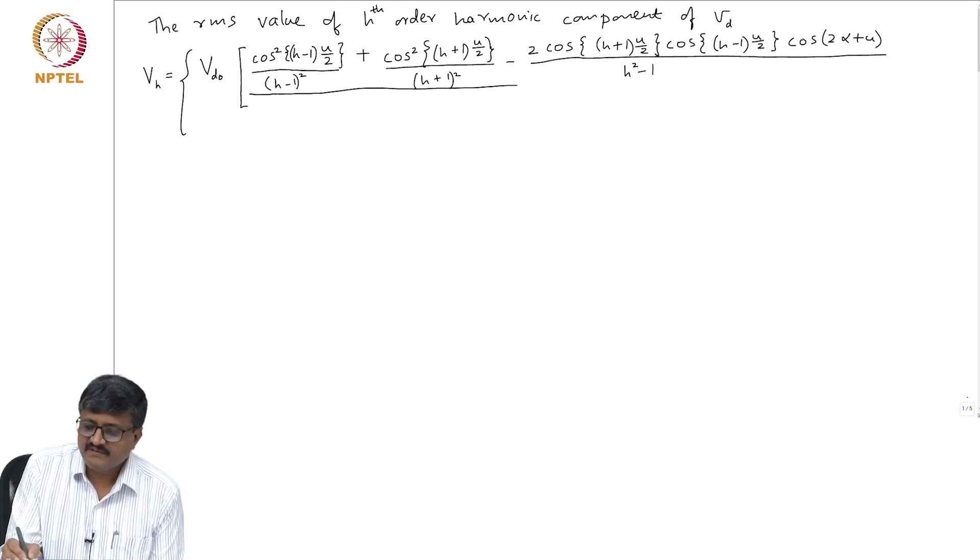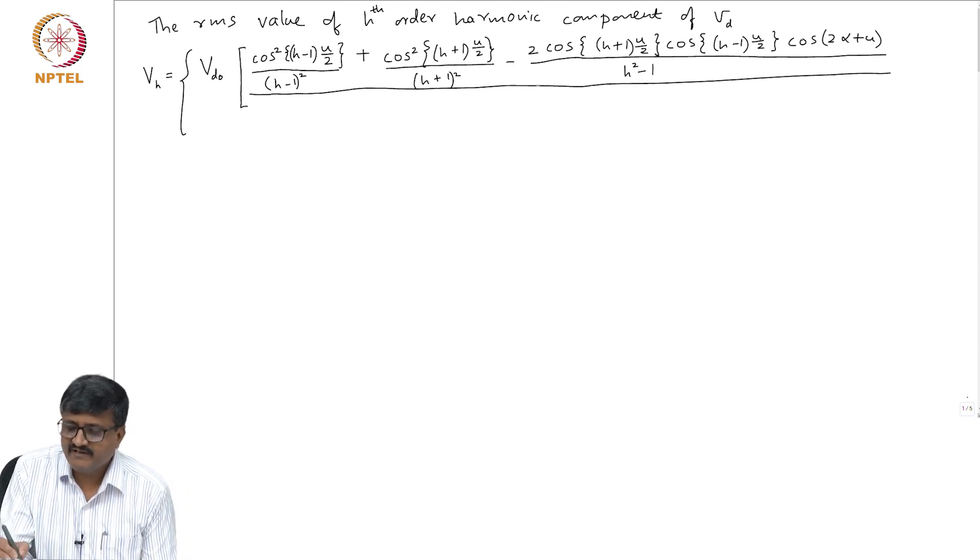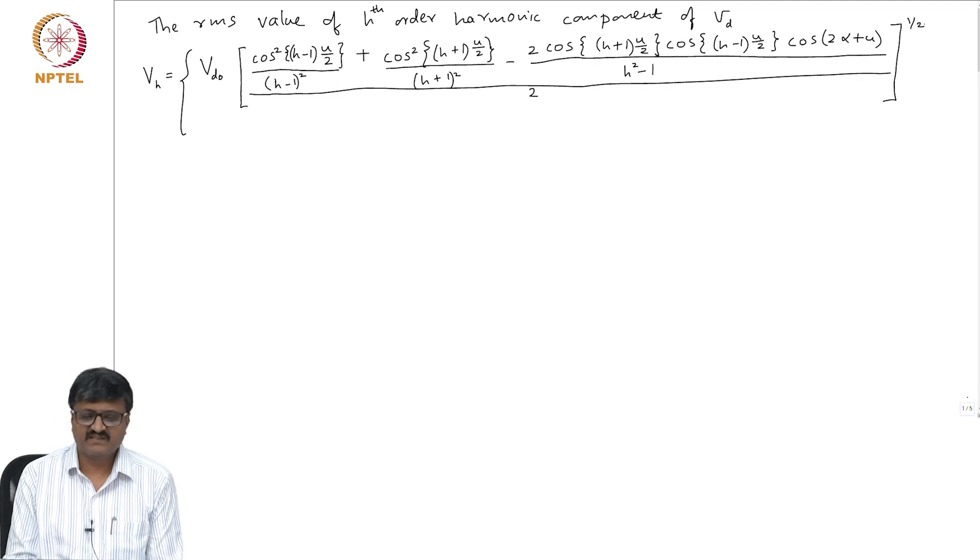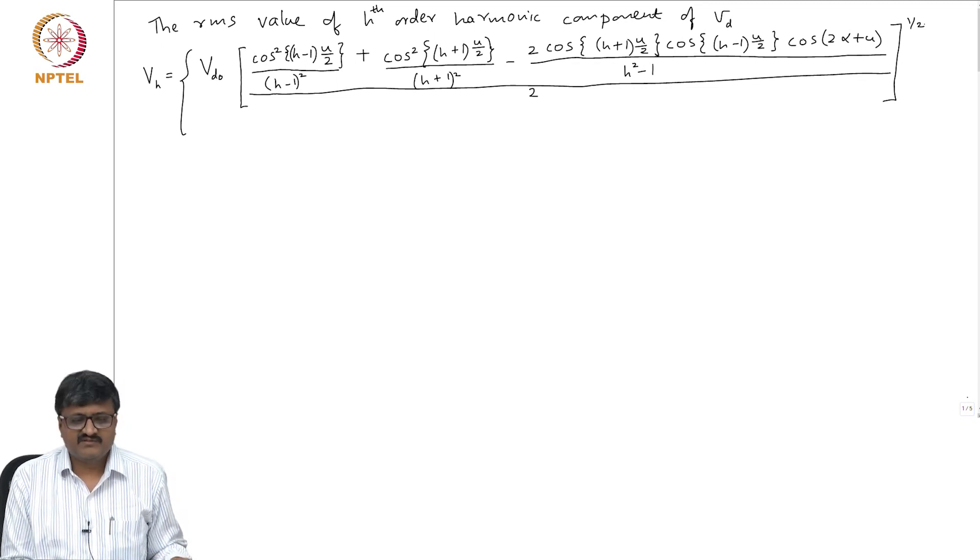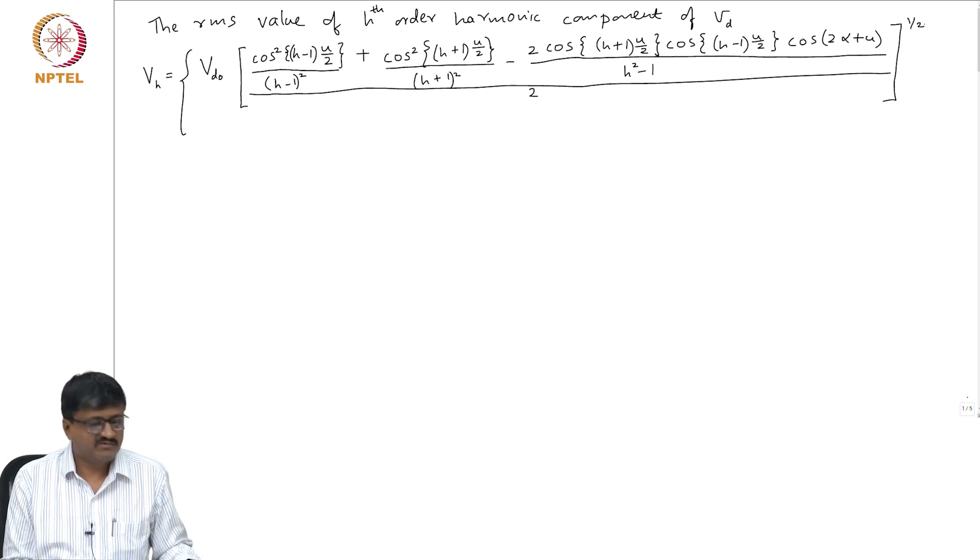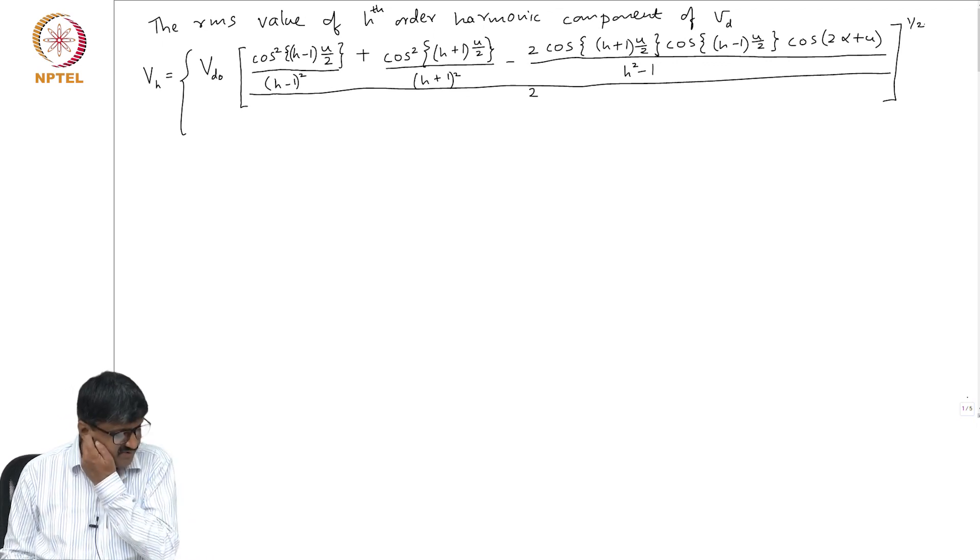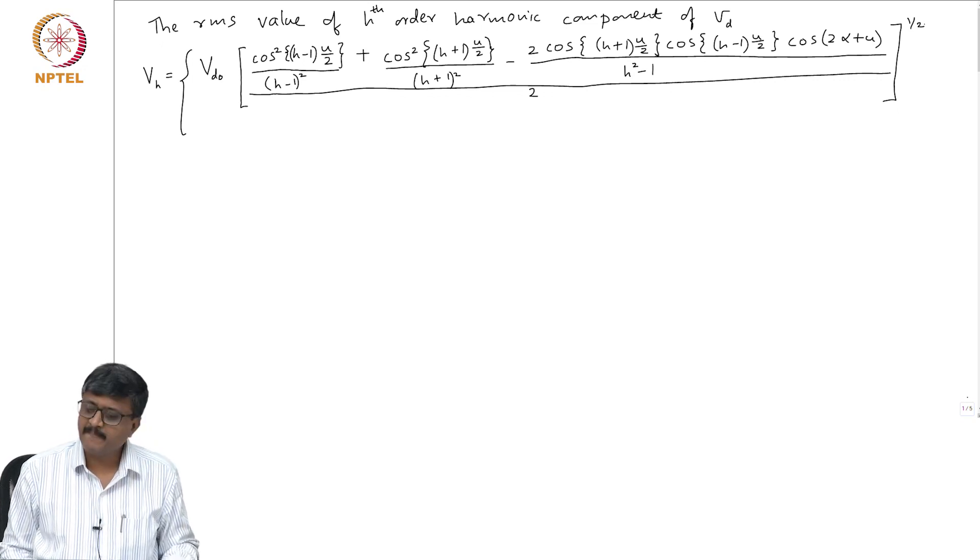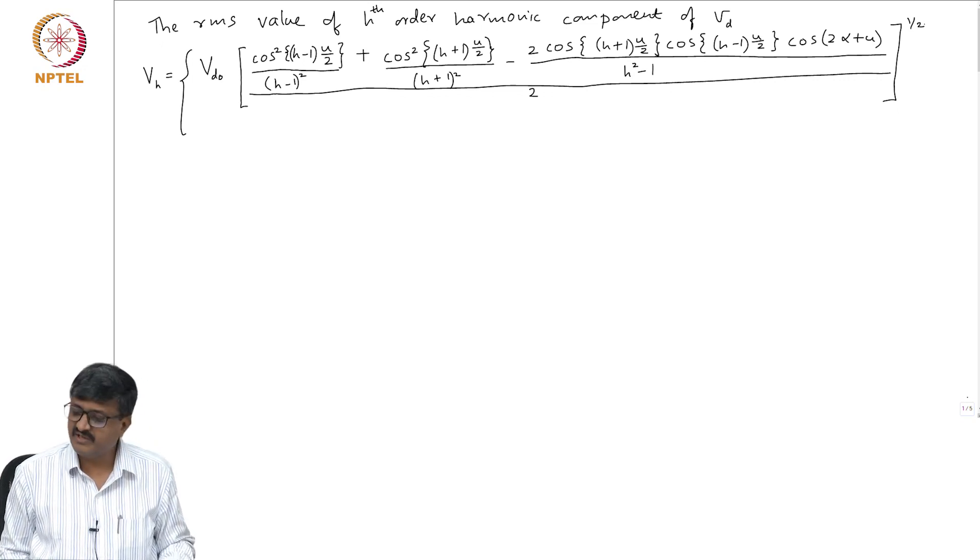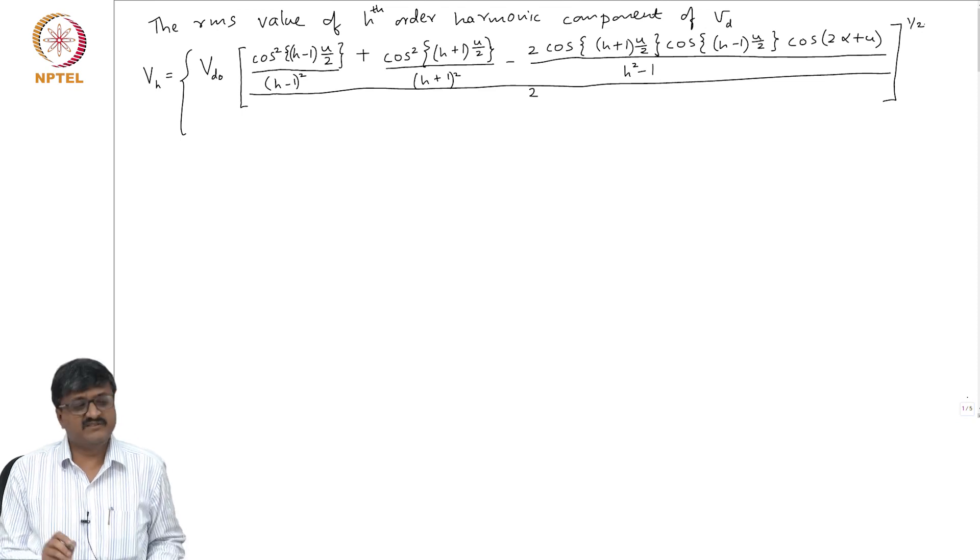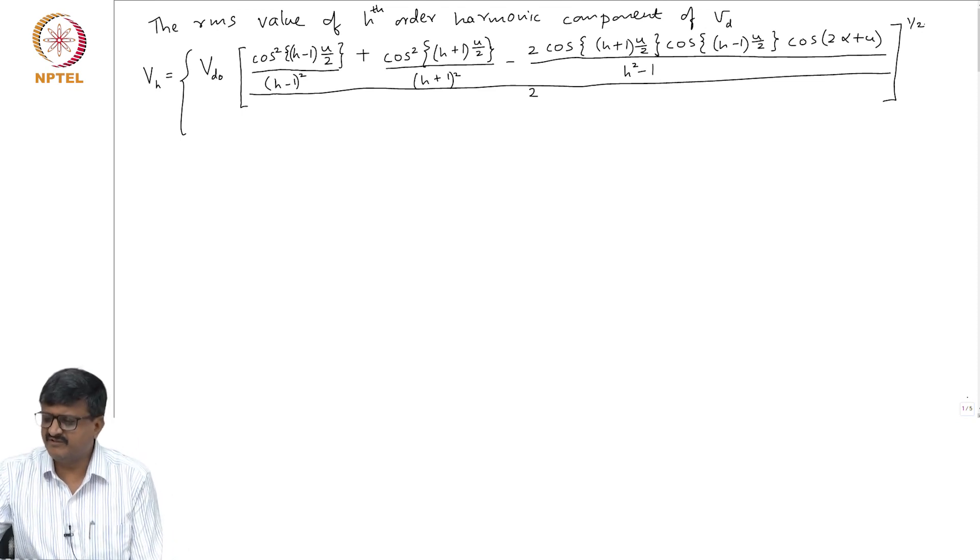This entire expression is divided by 2 and this is taken under root, raised to half. So this is V_D0 into cos squared (h minus 1) u by 2 by (h minus 1) whole square plus cos squared (h plus 1) u by 2 by (h plus 1) whole square minus 2 cos (h plus 1) u by 2 cos (h minus 1) u by 2 cos 2 alpha by (h square minus 1). This is the expression for V_H whenever it is non-zero.